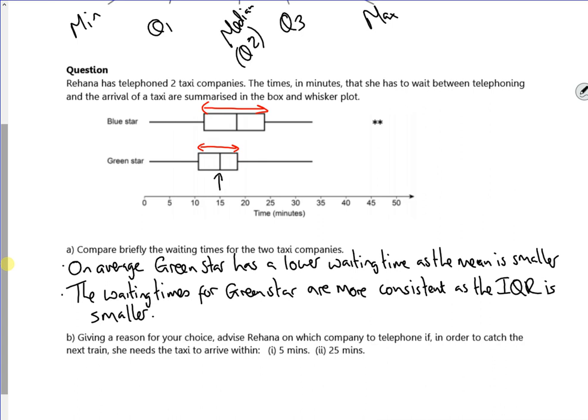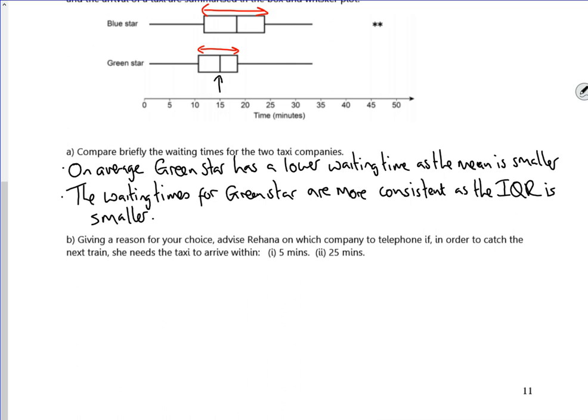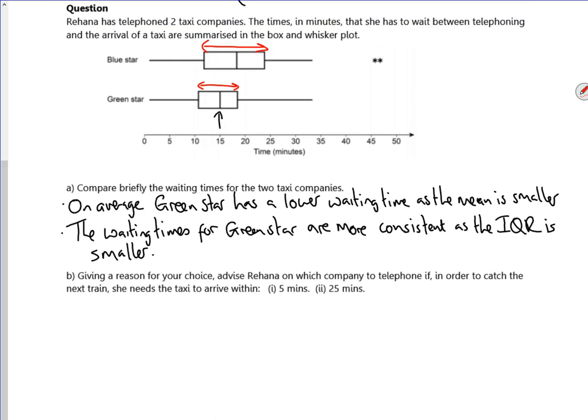So it says, by giving a reason for your choice, advise Rehana on which company to telephone in order to catch the next train. She needs the taxi to arrive within 5 minutes. Let's look where five minutes is. Okay. So for five minutes, we don't really know that much, do we? Because we're down the bottom end. So for five minutes, there's not enough information. I guess it doesn't really make a difference.